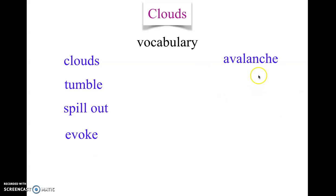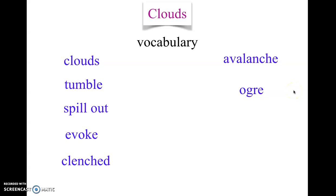Over here are words that are not very useful except for understanding the poem. Avalanche. Ogre. One more: clenched. And then one that's sort of halfway between something very useful and something not useful: mist.